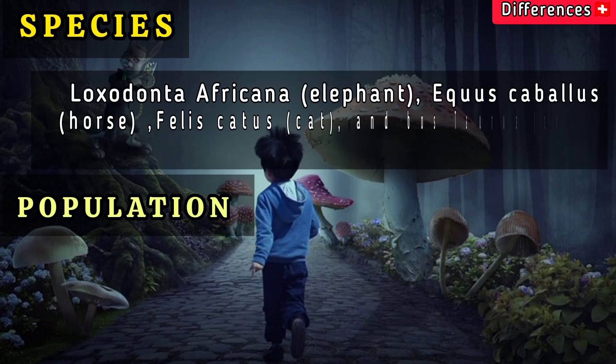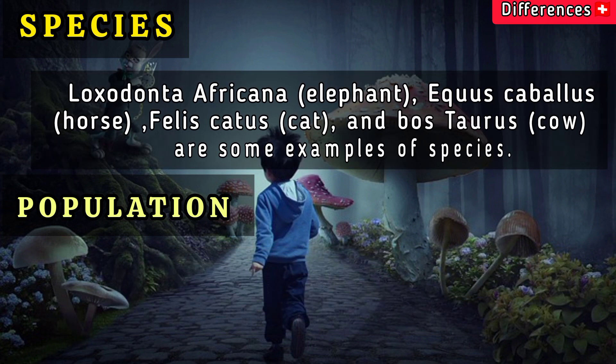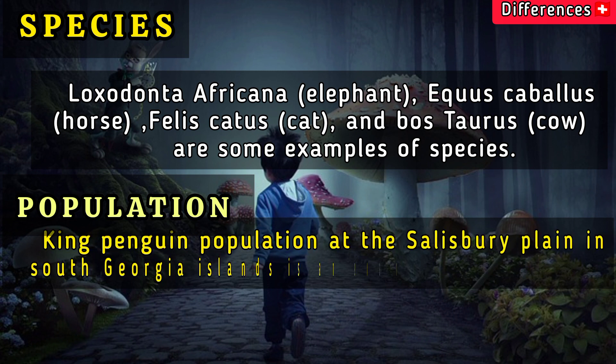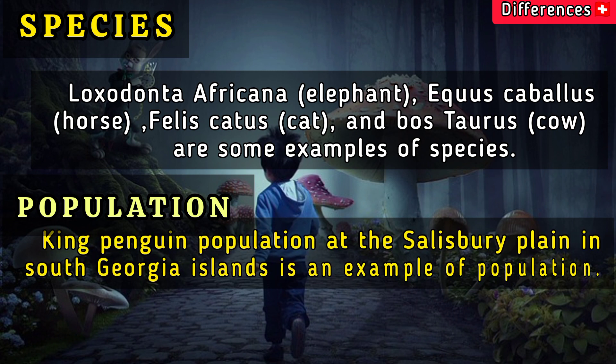Loxodonta africana (elephant), Equus caballus (horse), Felis catus (cat), and Bos taurus are some examples of species. The king penguin population at Salisbury Plain in South Georgia Islands is an example of a population.